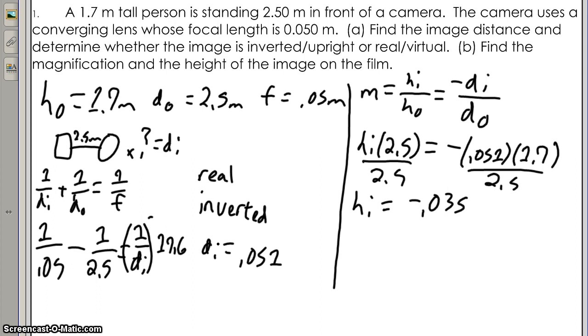Then you can solve your magnification, which is just equal to hI over hO, which is negative 0.035 over 1.7. There you have it folks, that is how you solve a converging lens problem.